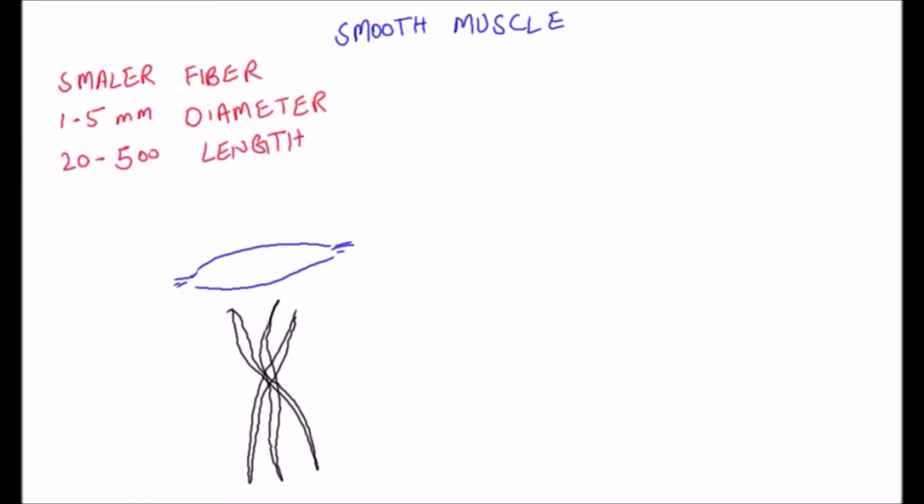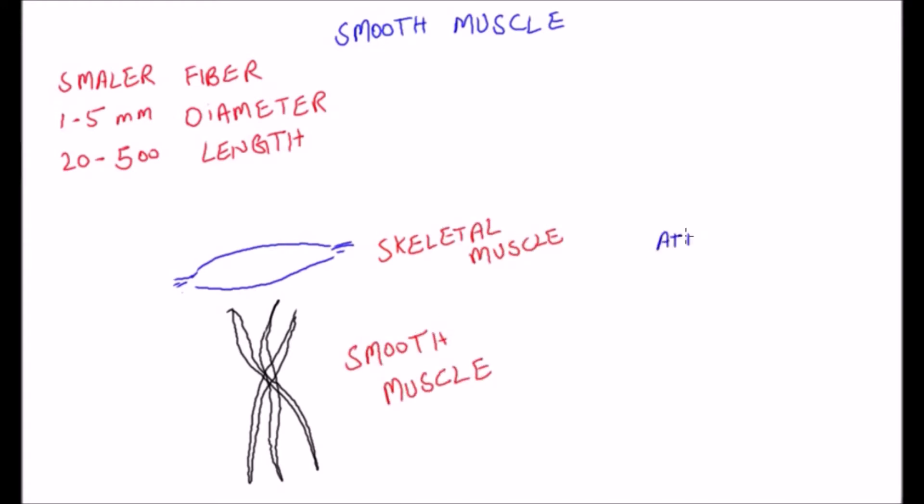Essentially many of the same principles of contraction apply to skeletal muscle as to smooth muscle. Most important are the same attractive forces between the myosin and actin filaments, but the internal physical arrangement of the smooth muscle fiber is different.